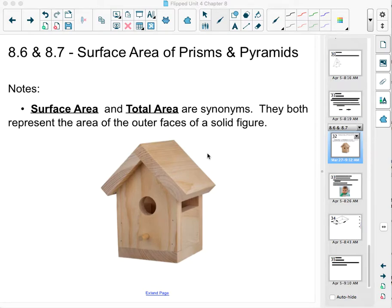This is the last video in chapter 8. We're combining 8.6 and 8.7 to do one video for surface area of prisms and pyramids. So first thing we want to talk about is what is surface area. These are your notes for 8.6 and 8.7. Surface area and total area are synonyms. They both represent the area of the outer faces of a solid figure.